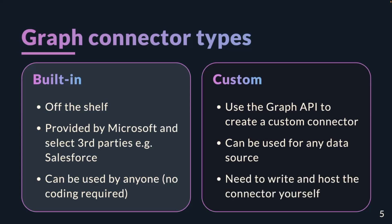The key difference is that with built-in connectors there's no infrastructure, you don't need to code anything — you click a few buttons and you're done. Whereas custom Graph Connectors are a bit more involved: you need to write some code, host it somewhere, and be able to access it.